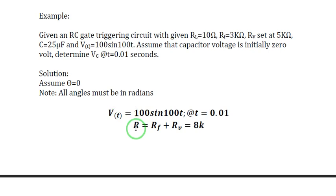R, as I've said, instead of including RL, we just neglect RL because it's very small at 10 ohms. So R is just equal to the sum of the fixed resistor and the variable resistor, equal to 8 kilo ohms.